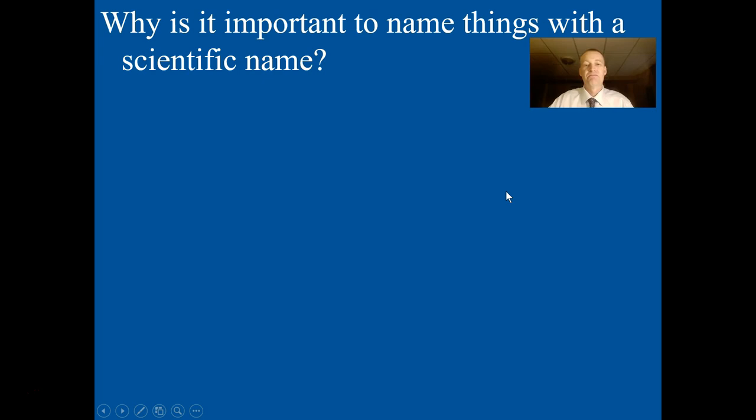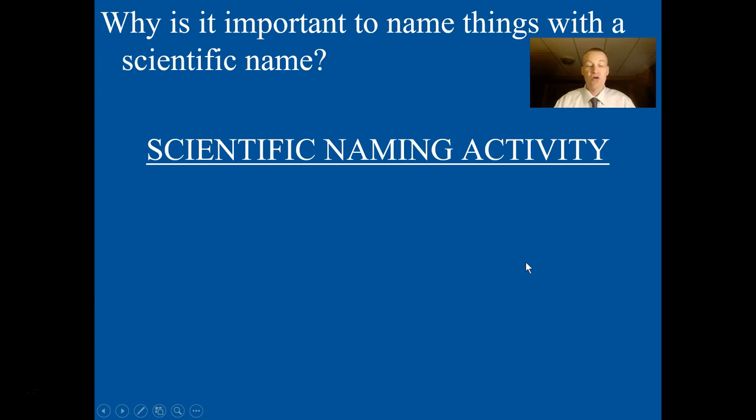Why is it important to name things with a scientific name? If you discovered a new plant that was a cure for cancer, you would want to communicate that information in the scientific literature with anybody in the world. If you use a common name, people in China or Europe may not understand what that means. But if we use a common language, we can communicate with everybody else in the world — that's why we use scientific names.